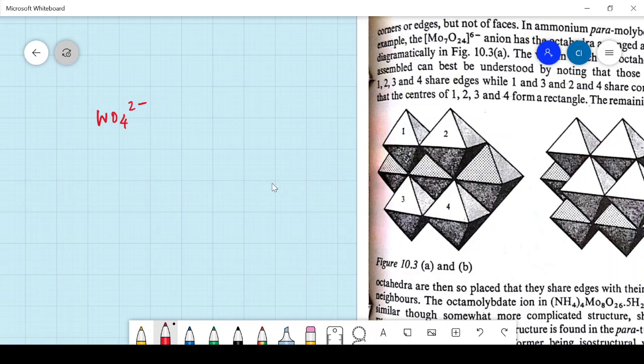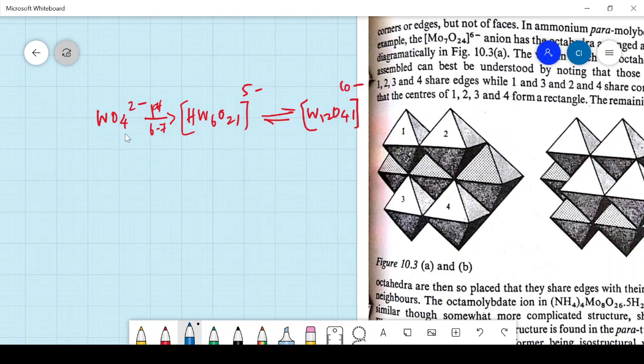I am just making a recap of the same. We started with WO4 hydra and I told you that we have to use pH 6 to silane and it becomes HW6O21 5-. This existed in equilibrium and it gave W21O41 10-. The same is H3V3.